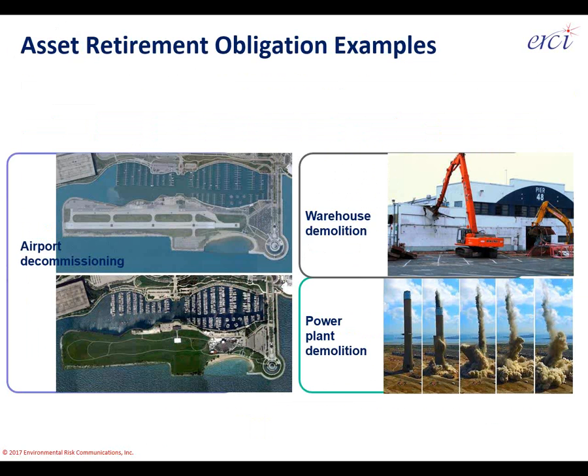Meigs Field had an operating runway with taxiways, a terminal building, air traffic control tower, fueling systems, and parking. All of that has been replaced, as seen in the aerial photograph. That transition is an example of an asset retirement obligation where the land changed use and the former utilization markers were removed and the site reconverted to future beneficial reuse. The warehouse demolition in the upper right is Pier 48 at the Port of Seattle, and the lower right shows a power plant demolition in the United Kingdom.